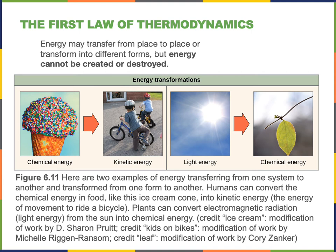Photosynthesis stores energy from light in chemical bonds — the covalent bonds between atoms. And then as we consume and break down our food, we release the chemical potential energy by breaking the covalent bonds between atoms in these organic molecules.